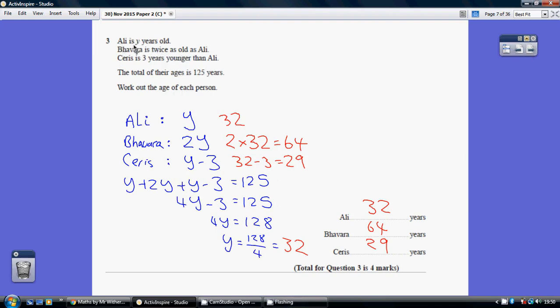So, they tell us Ali is Y years old, so Ali is Y. Now, Bavara is twice as old as Ali, so Ali is Y, so Bavara is twice whatever this number is, so two lots of Y. And Karis is three years younger than Ali, so Y take away three for Karis. So, that's your starting point.